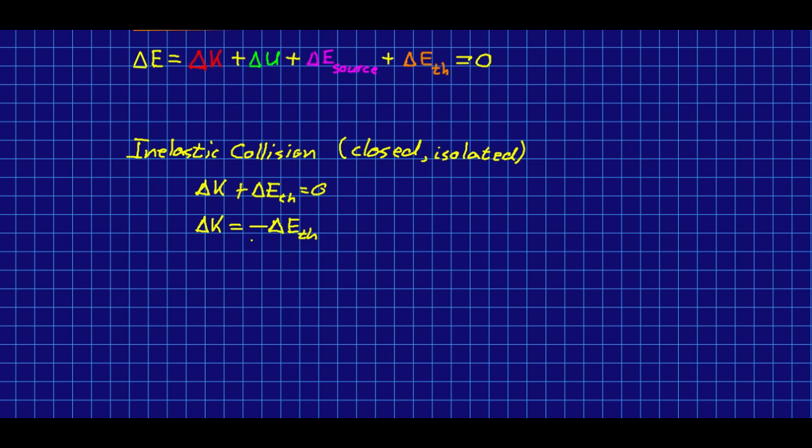Often we want to know the thermal energy produced in an inelastic collision, and so let's do that. Let's write our change in thermal energy as the negative of the change in kinetic energy. Now remember that the kinetic energy can be written as a kinetic energy of the center of mass plus, in a two-object collision, a half mu v12 squared, where that's the relative speed v12.